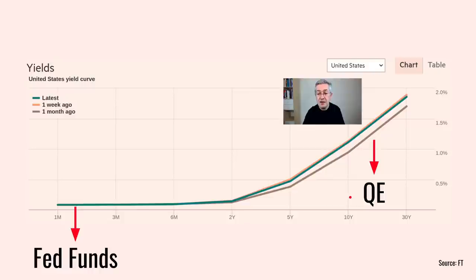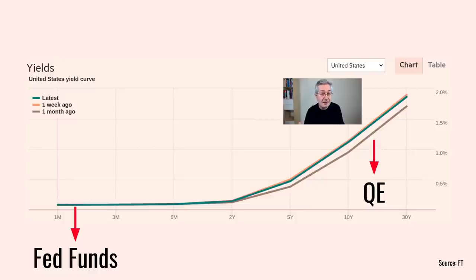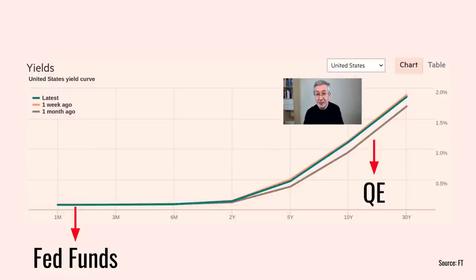But what about rates further out on the curve? Those aren't driven by the central bank policy rate so directly — they're also influenced by things such as inflation expectations and growth expectations. So if the central bank wants to push down these longer-term rates, what they have to do is buy the bonds with that maturity. The central bank has almost unlimited resources; it can literally create money out of thin air. If it buys many of these bonds, that pushes up bond prices and pushes down bond yields, reducing the rate of interest that the government pays on debt. But you may be thinking the government can borrow cheaply anyway — why reduce that borrowing cost even further?